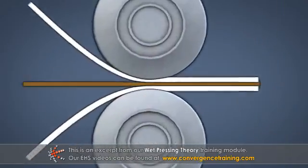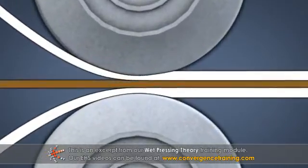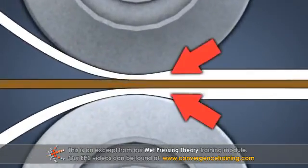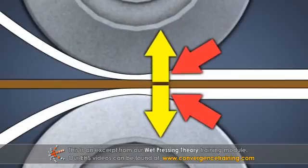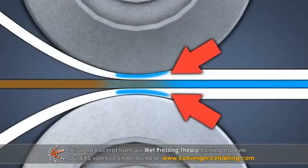Water removal from the sheet occurs in two phases. During the compression phase, air is forced out of the sheet and felts, and the nip pressure forces water from the sheet into the felts.